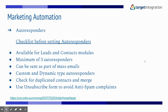You can set up a maximum of three autoresponders and a maximum of five follow-ups per autoresponder. You can also send autoresponder emails as part of mass emailing. The number of mass emails that can be sent out per day per organization will vary according to your subscription, so check that with Zoho.